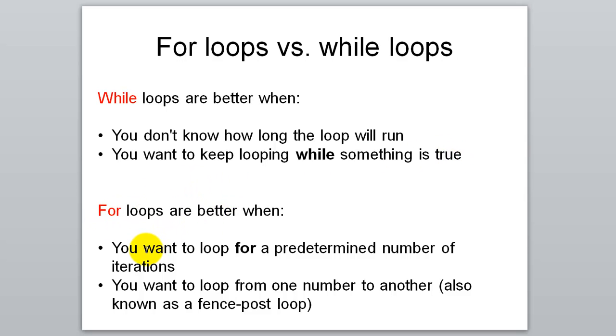For loops are better when you want to run for a predetermined number of iterations, so you know whenever you enter that loop exactly how many times it's going to run. Or something called a fenced post loop, like you want to loop from one number to another. Say, add all the numbers from 100 to 200. You want to start at 100, go to 200, and hit all the numbers in between, then that would be called a fenced post loop.